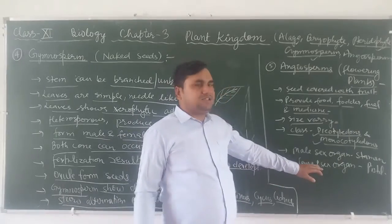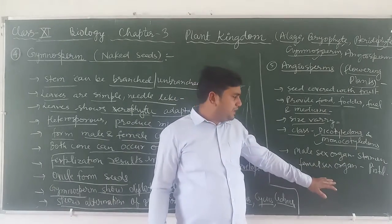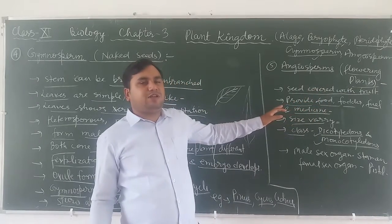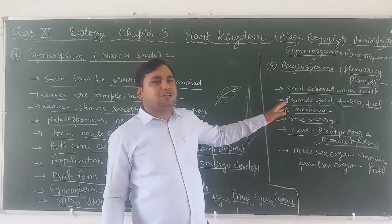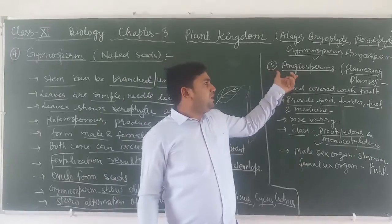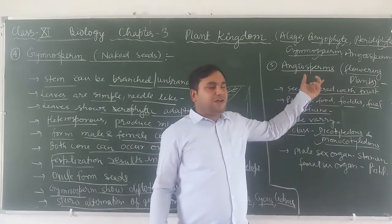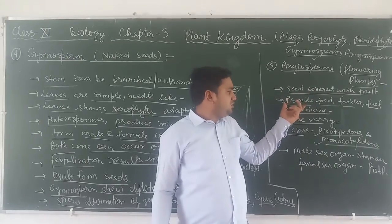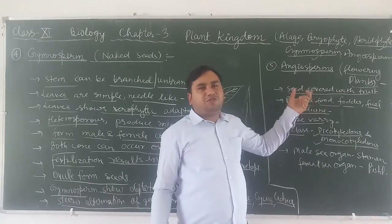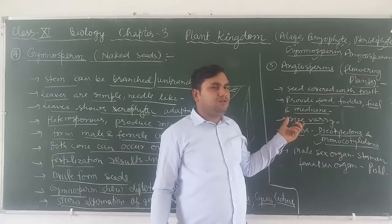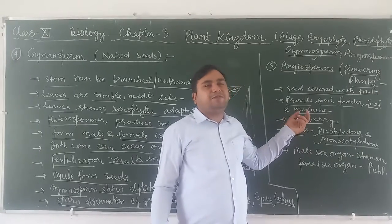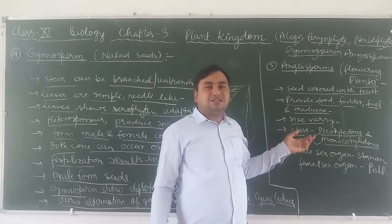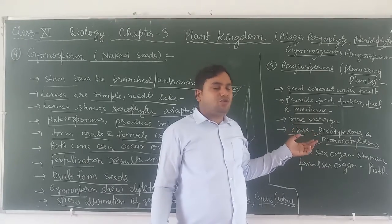The male sex organ of angiosperm is the stamen and the female sex organ is the pistil. Angiosperms are also known as flowering plants. Their seed is covered with fruit and they provide food, fodder, fuel, and medicine. Size varies widely, and their class is divided into dicotyledon and monocotyledon.